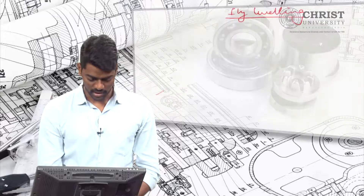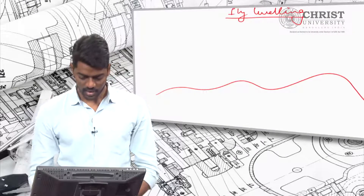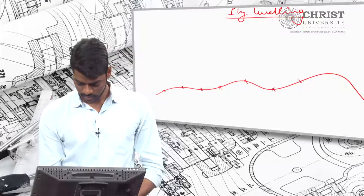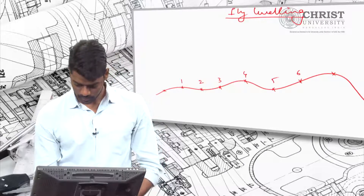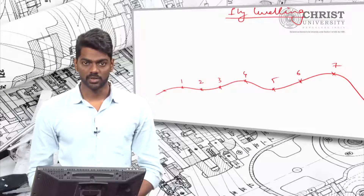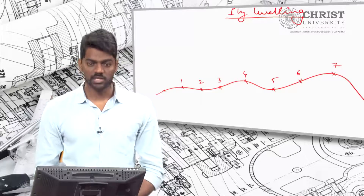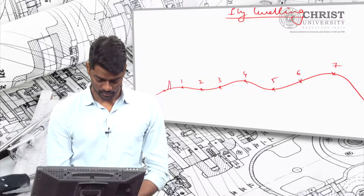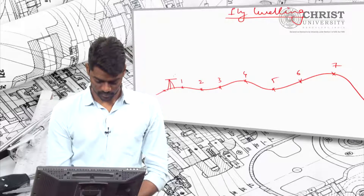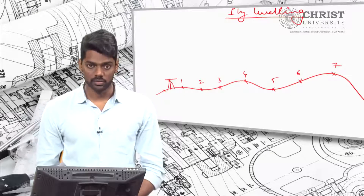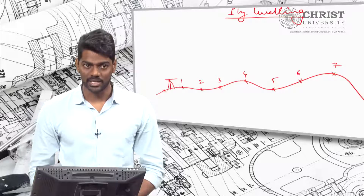I am taking a small terrain like this. On this terrain, if you want to find out the reduced levels, I am considering different points on this terrain. Our intention is to find out the reduced levels of all seven points marked on this terrain surface. To do that, we have to set our instrument here. You can use a dumpy level or a theodolite to determine the reduced levels. First, we set the required instrument in a place from where you can determine the reduced levels of unknown points.